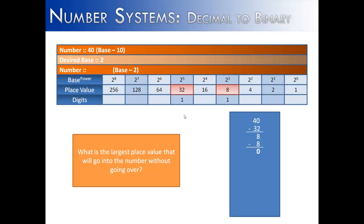Now that we have 0, we put a 0 in the rest of the slots we did not use — that would be in the 16, 4, 2, and 1 positions, or 2 to the power of 4, 2 to the power of 2, 2 to the power of 1, and 2 to the power of 0. So 40 in base 2 is 101000.